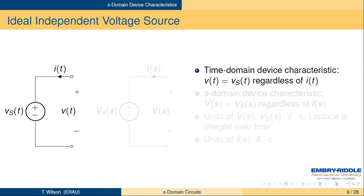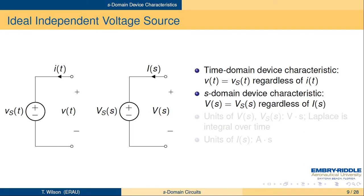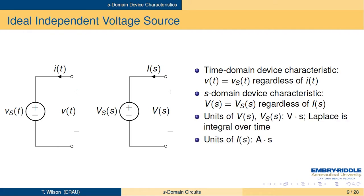What do devices look like in the S-domain? Here's the independent voltage source, where the voltage across the terminal pair is the voltage of the source, regardless of what the current is. We simply transform all of those terms into the Laplace world. The Laplace transform of little V of T is cap V of S, and the current I of T turns into cap I of S. The units of voltage in the Laplace domain will be volts times seconds, because the Laplace transform is the integral of V of T times e to the minus ST dT. E to the minus ST is dimensionless, so you've got V of T in volts and DT in time — volts times time, volt-seconds. Similarly, the units of current in the Laplace domain will be amp-seconds.